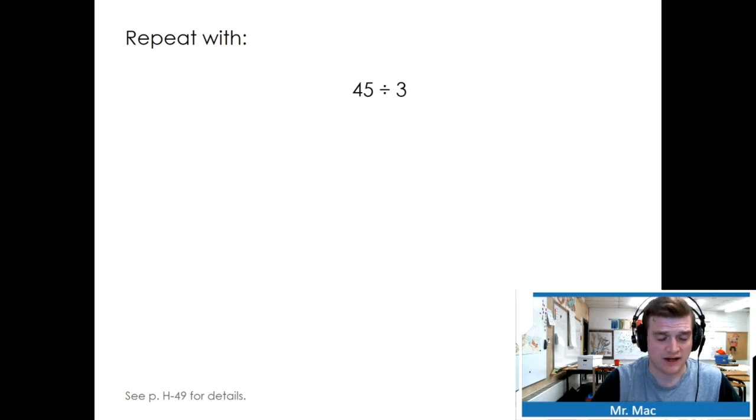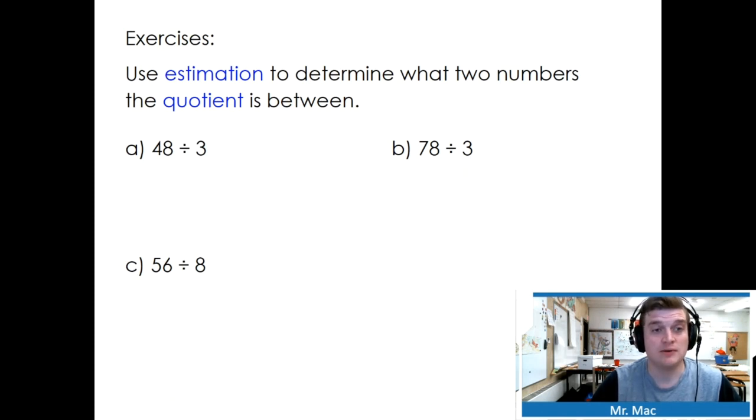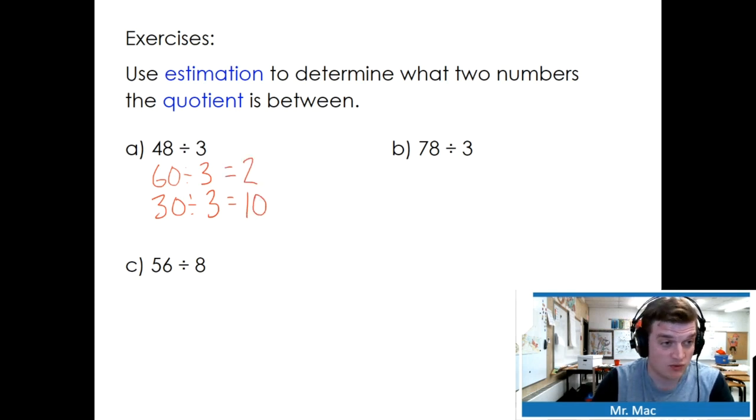Repeat with 45 divided by 3. 40 divided by 3 doesn't make an easy estimate. And neither does 50. Use estimation to determine what two numbers the quotient is between. So instead of using 50, I'm going to use 60 divided by 3. And instead of using 40, I'm going to use 30 divided by 3. We know 30 divided by 3 is 10. We know 60 divided by 3 is 20. We know that our quotient is between 10 and 20. Try the next two.